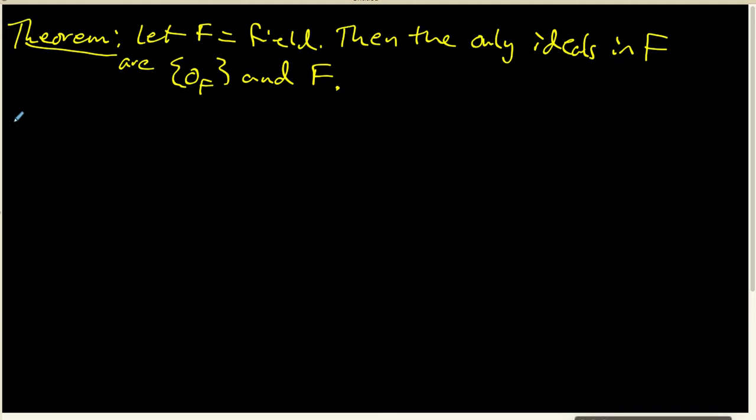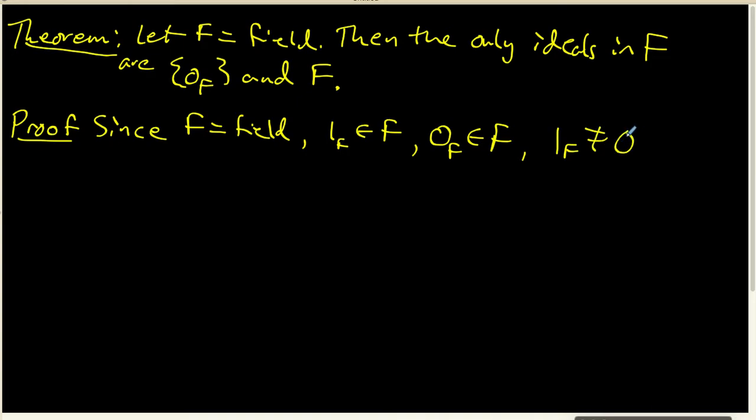Hopefully you've done that. Here's how my proof runs. The first thing that I want to do is I want to observe that since F is a field, we know that there is a 1 in F, there is a 0 in F, and I know that the 1 and the 0 are different elements. That's part of the definition of field in the textbook that we're using this summer.